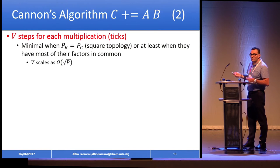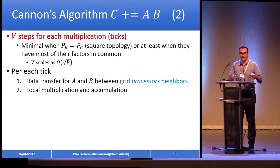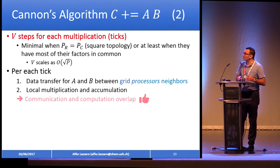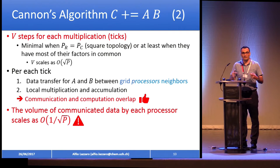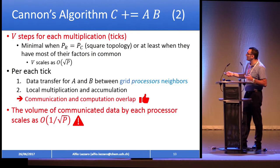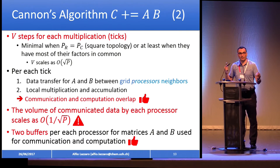Per each tick, you do a transfer of data for A and B — C remains local. You do a local multiplication and accumulation over C, and run V ticks. You can overlap computation and communication, but unfortunately the amount of data communicated per processor scales as 1/√P. The algorithm requires two buffers for A and two for B — one for communication, one for computation — so you can overlap them. The algorithm is pretty efficient in terms of memory, but at some point communication will be the limiting factor.